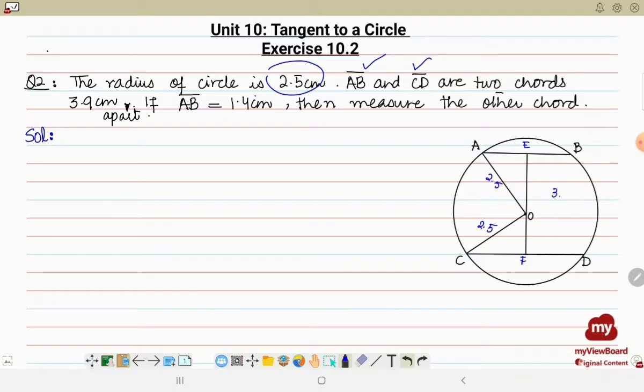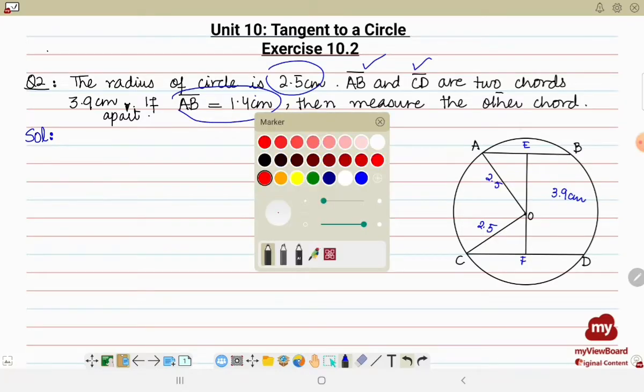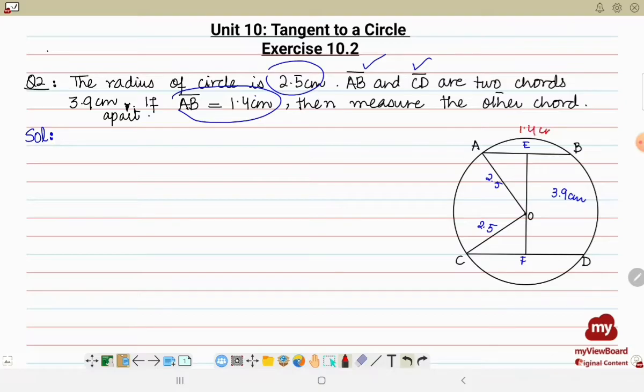If AB is equal to 1.4 centimeter, the measure of one chord which is given to us as 1.4 centimeter, we have to find the measurement of the other chord, that is, we have to find out the value of CD.